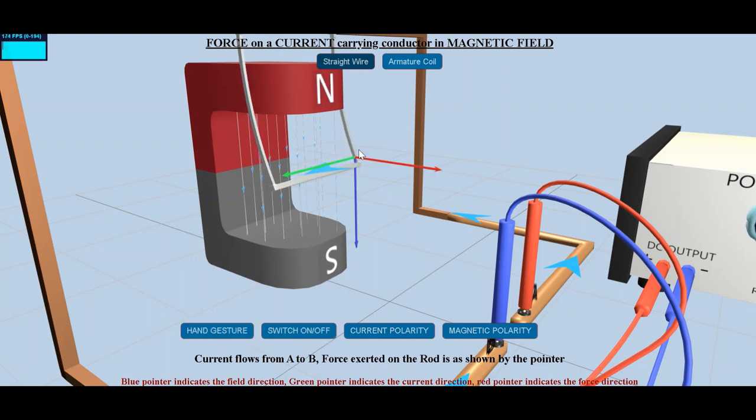Change the magnet polarity as well as the current direction and visualize the effect of it on the conductor. The Fleming's left hand rule can be applied for all possible cases.